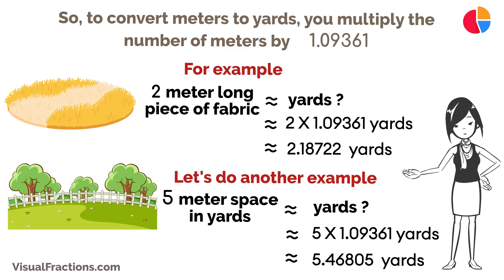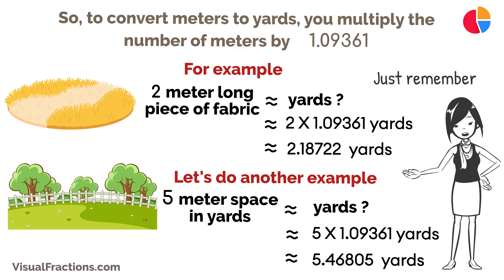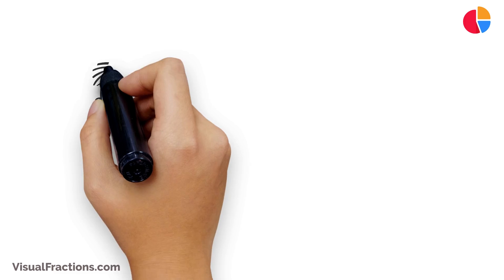And there you go. Just remember, 1 meter is about 1.09361 yards. With this conversion, you can easily switch between meters and yards, ensuring your measurements are precise for any project or activity.